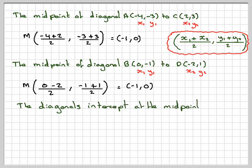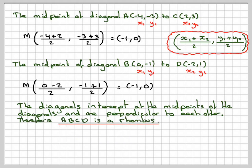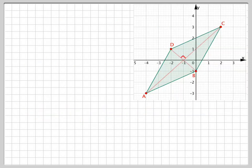The diagonals intercept at the midpoint along the diagonals and are perpendicular to each other. Therefore, ABCD is a rhombus. Here is a diagram showing that — we found both gradients, confirmed they are perpendicular, and found that the diagonals intercept at the midpoint M on both diagonals.